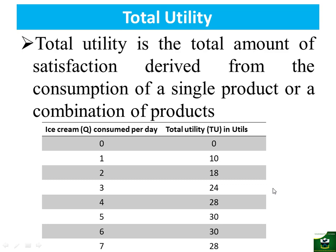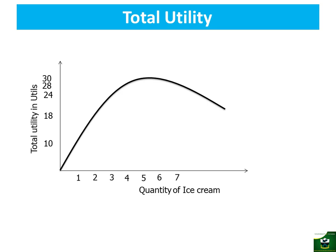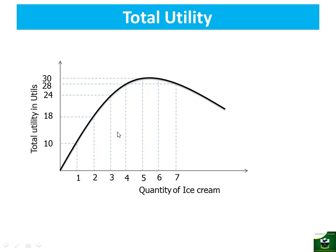Looking at the graphical representation, on the vertical axis we measure total utility in utils, and on the horizontal axis we measure ice cream consumed. Using the figures from the previous table, we draw a graph that increases at a diminishing rate, reaches a maximum, and then starts to decline. For the first unit consumed, total utility is 10; for the second unit, total utility is 18; for the third, it is 24. We plot the fourth, fifth, sixth, and seventh units as well to show how the movement is happening. This graph represents total utility.